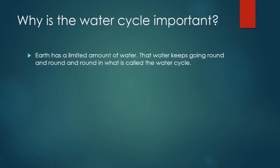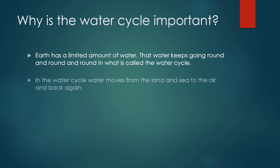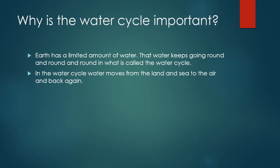So the water cycle is very important to us in providing water on our land. Our Earth has a limited amount of water, and that water keeps going around and around in what is called the water cycle. The water cycle moves from the land and sea to the air and back again, going through the process of evaporating, condensing, freezing, and melting. This is how the process continues in a cycle.